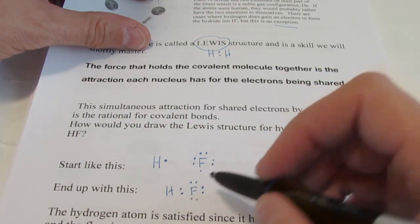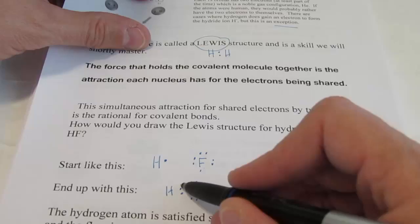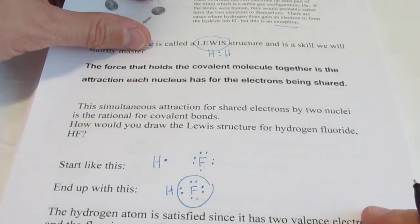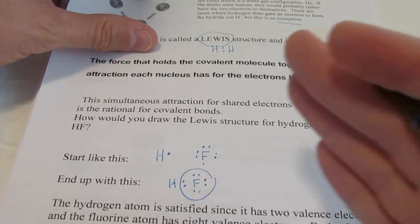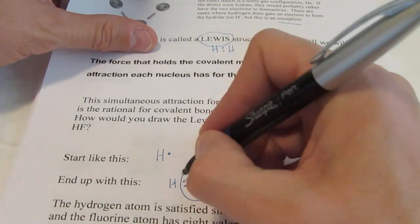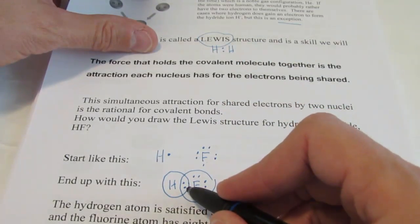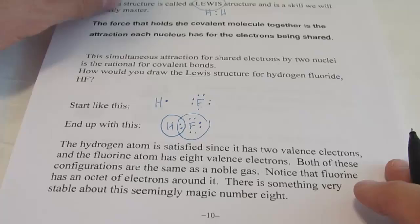Its configuration ends with 2s2, 2p5. It's a member of group 17. It has seven valence electrons. So what we would see would be three pairs and one all by its lonesome. Notice that hydrogen needs one more electron to attain the noble gas configuration of helium, and fluorine needs one more electron to attain the noble gas configuration of neon.